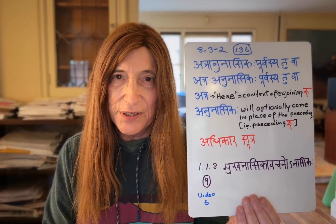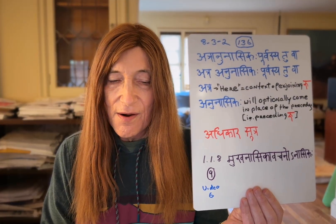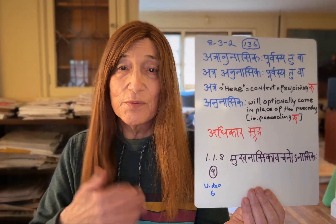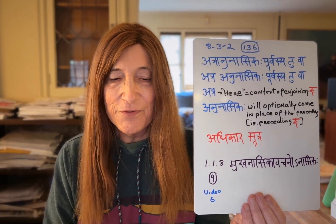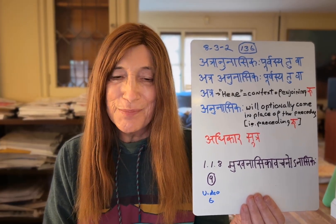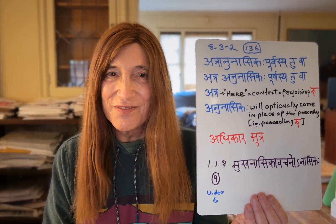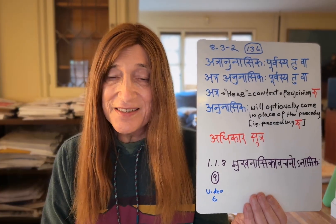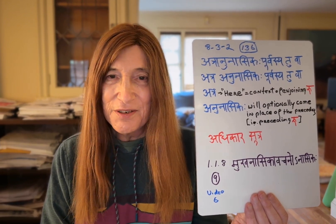The meaning of the sutra is: anunasika will optionally come in place of the preceding vowel — meaning the vowel that precedes ru. So when ru is enjoined, the vowel before it will optionally become anunasika — 'to va,' optionally. In the commentary there's discussion about why it says 'optionally,' but essentially it will come but optionally. Keep it in mind because we'll return to it shortly: 'atra anunasika purvasya tu va.'